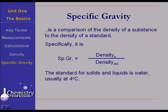The standard for solids and liquids is water, usually at 4 degrees Celsius. If not, maybe you should look back at the section on density. But at about 4 degrees Celsius, the density of water is 1 gram per milliliter.